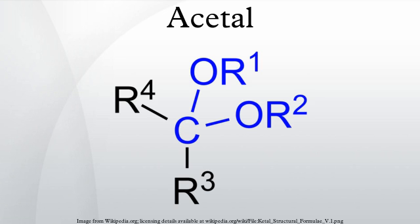The formation of acetals reduces the total number of molecules present and therefore is not favorable with regards to entropy. A way to improve this is to use an orthoester as a source of alcohol. Aldehydes and ketones undergo a process called acetal exchange with orthoesters to give acetals. Water produced along with the acetal product is used up in hydrolyzing the orthoester and producing more alcohol.